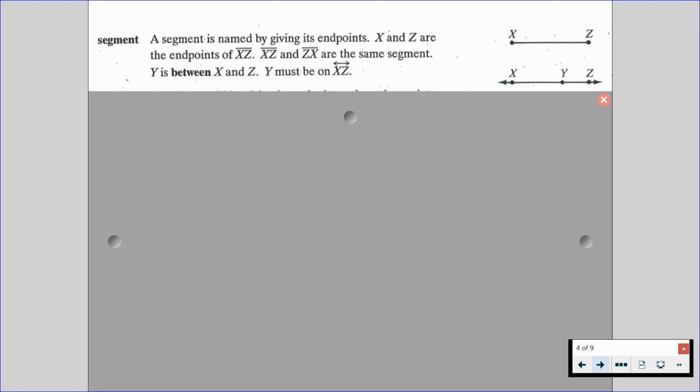So we have what's called a segment. A segment is named by giving its endpoints. Point X and point Z are the endpoints of segment XZ. Segment XZ and segment ZX are the same segment. Point Y is between point X and point Z. So point Y must be on line XZ.